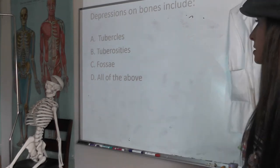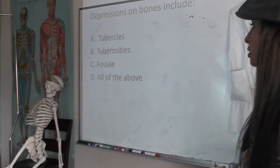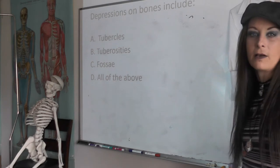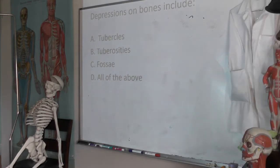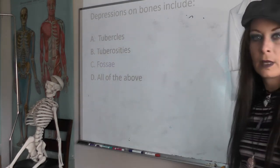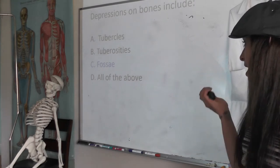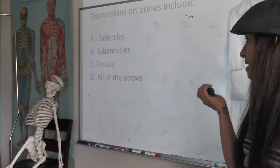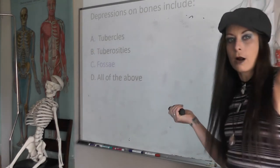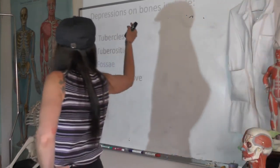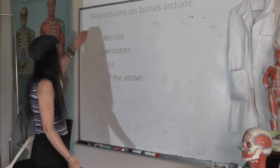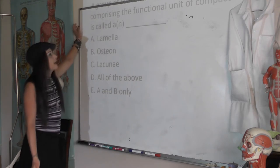Depressions on bones include: A, tubercles; B, tuberosities; C, fossa; D, all of the above. The answer is fossa. Tubercles and tuberosities are attachment points, so they're projections off of bones, not depressions.